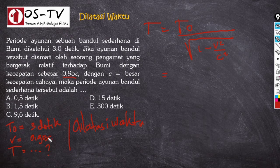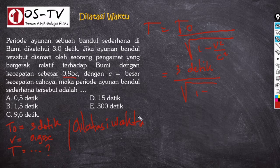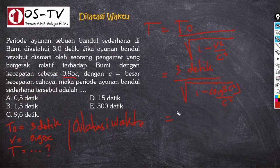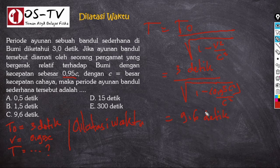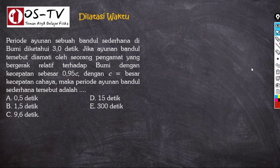Kita masukkan nilai-nilainya: T₀ = 3 detik, dibagi dengan akar (1 − (0,95C)²/C²). Kalau perhitungan ini kita selesaikan, kita akan memperoleh nilai sebesar 9,6 detik. Dengan demikian jawaban dari soal ini adalah C. Sekarang kita coba lanjutkan pada contoh soal nomor 2.